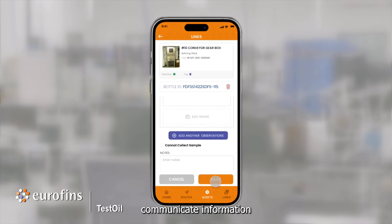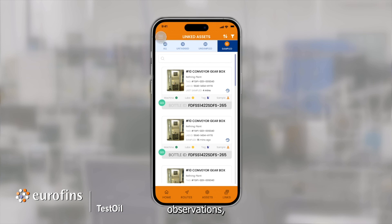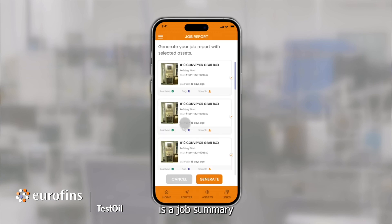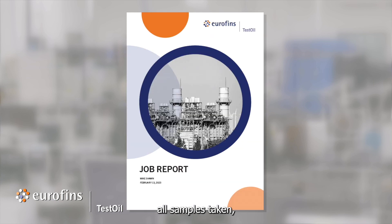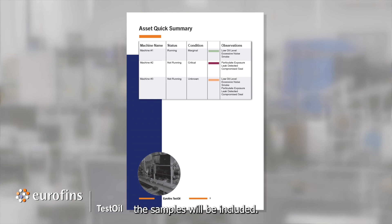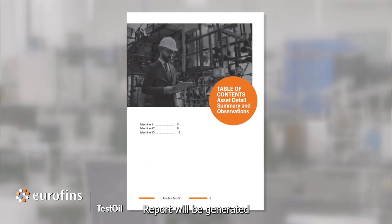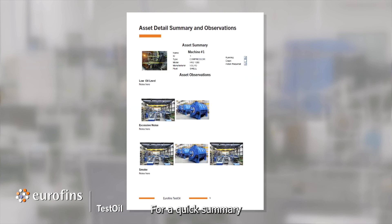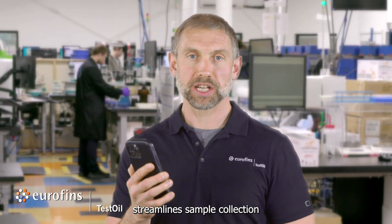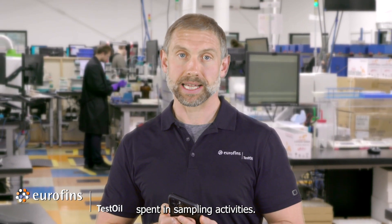You may want to communicate information about a sample, such as visual observations, sample-specific images, and add these to a job summary. The Job Report is a job summary which lists all samples taken, those not taken, the individual that took the samples, and a description of the job. A list of the samples taken from a specific route, as well as those not collected, and any custom observations made by the technician will be included. This Job Report will be generated and emailed to any individual specified by the program administrator, for a quick summary and the ability to audit a sampling route. Now you can see how using AssetLink can streamline sample collection and save 50% of time spent in sampling activities.